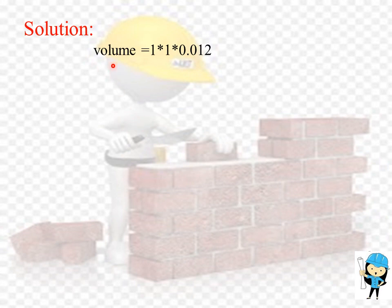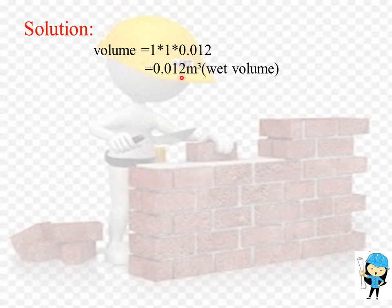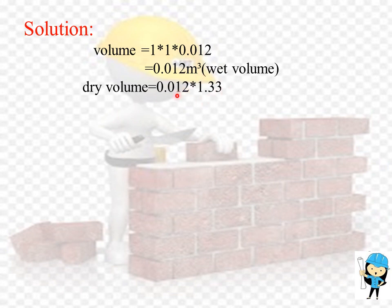The first step is we need to find the volume. To find out the volume, the formula used is length into breadth into thickness. Here we have taken length as 1 meter, breadth as 1 meter, and thickness as 0.012 meter. By multiplying these three values we get the wet volume, that is 0.012 meter cube. Now we are going to calculate the dry volume. To convert wet volume into dry volume we multiply by 1.33, which is the constant factor. By multiplying these two factors we get the dry volume, that is 0.01596 meter cube.